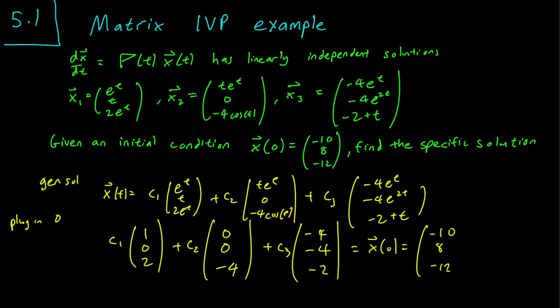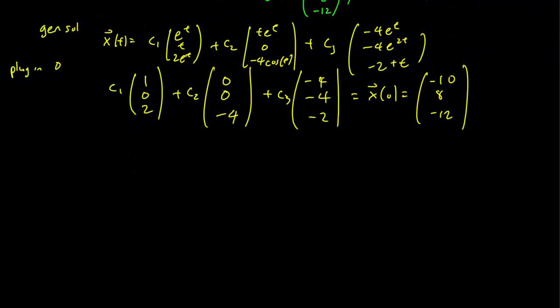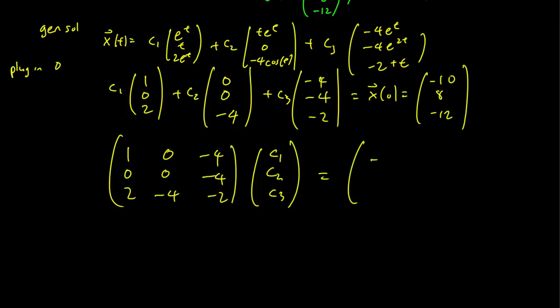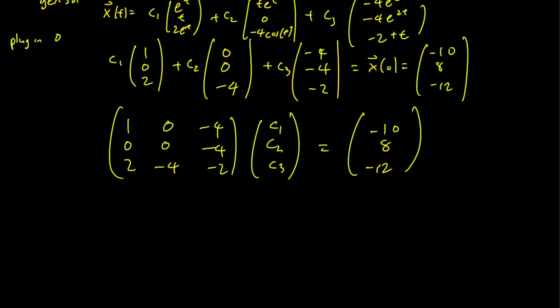And writing this down in terms of a matrix we get simply this is our matrix initial value problem form. And our goal is to diagonalize this matrix.